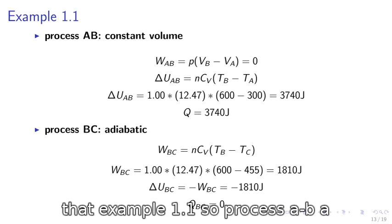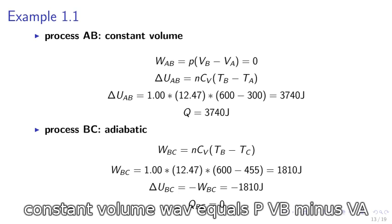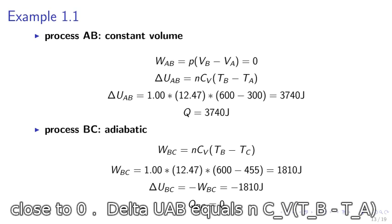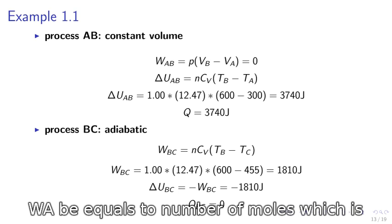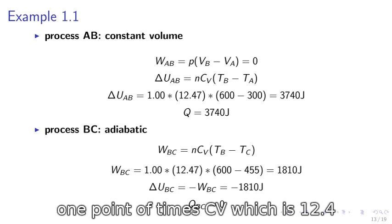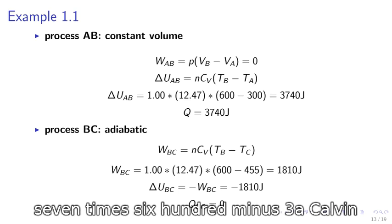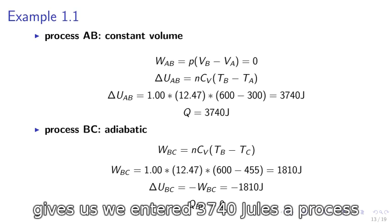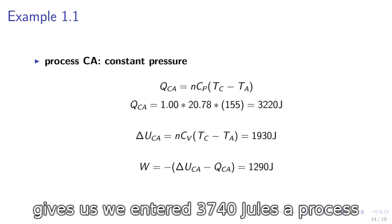Example 1.1. Process AB at constant volume. WAB equals P(VB minus VA) equals 0. Delta UAB equals NCV(TB minus TA). Delta UAB equals the number of moles, which is 1.0, times CV, which is 12.47, times 600 minus 300 Kelvin. It gives us 3,740 joules.